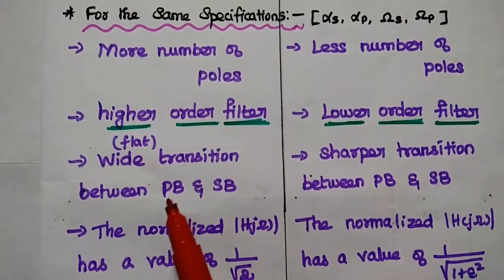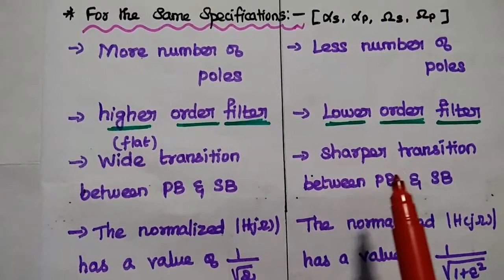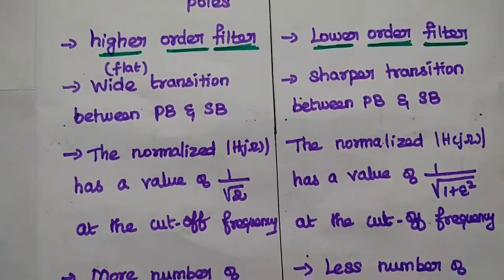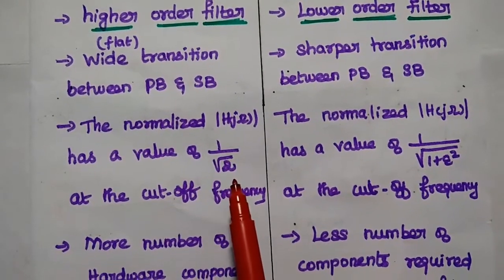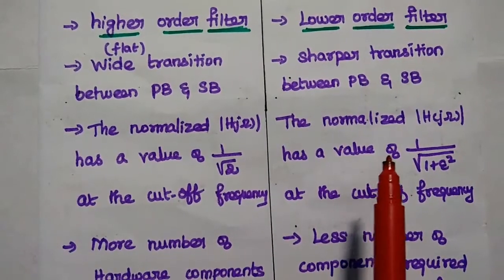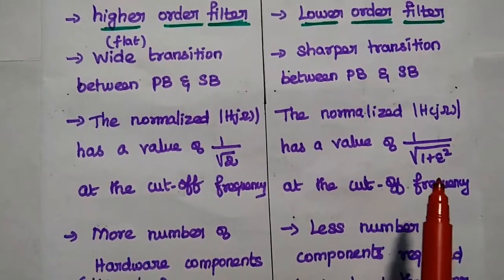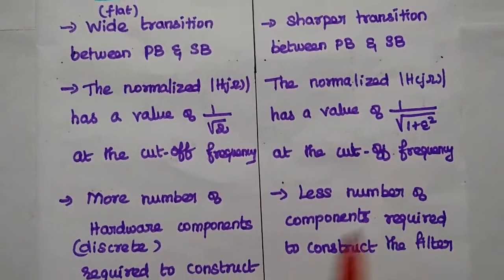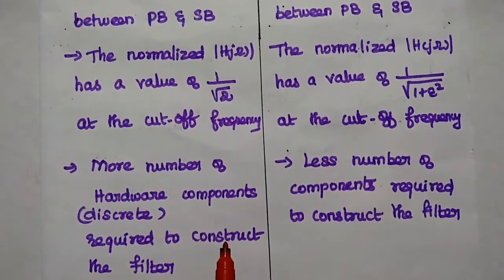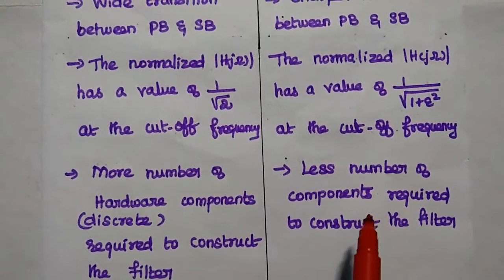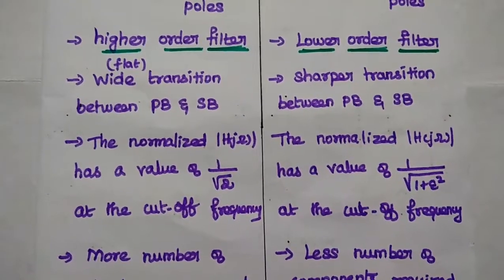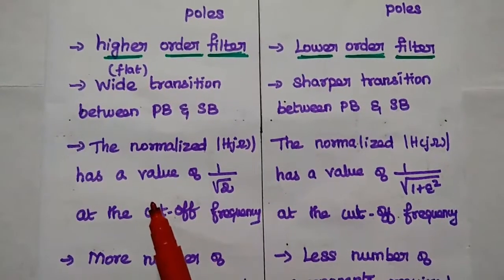The Butterworth filter has a wide transition between passband and stopband, but the Chebyshev filter has a sharper transition. The normalized magnitude response of the Butterworth filter has a value of 1/√2, i.e., 3 dB, at the cutoff frequency, whereas in the Chebyshev filter it has a value of 1/√(1 + ε²) at the cutoff frequency. Consequently, the Butterworth filter requires more discrete components to construct, while the Chebyshev filter requires fewer components because it is a lower-order filter — and that is the major advantage of the Chebyshev filter over the Butterworth filter.